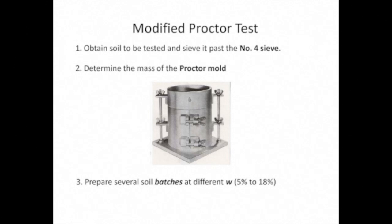We then divide the soil into at least six separate batches, and we add water — or remove water by drying — to each batch so as to achieve a different water content in each batch. For example, batch number 1 with a water content of 5%, batch number 2 with a water content of 8%, and so on. Typically, we want water contents that range between 5% and 18%. We must keep each prepared batch in a sealed bag so that water is not lost by evaporation.